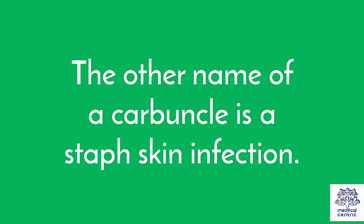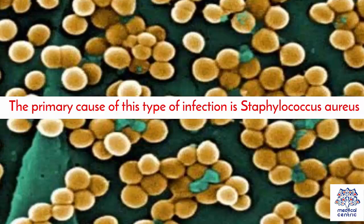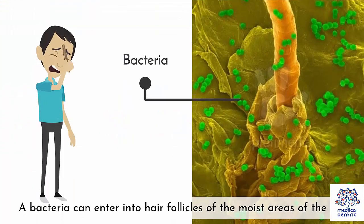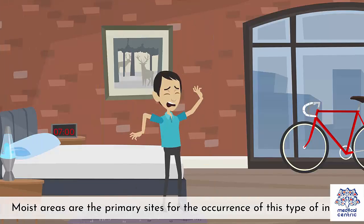The other name of a carbuncle is a staph skin infection. The primary cause of this type of infection is Staphylococcus aureus. Bacteria can enter into hair follicles of the moist areas of the body. Cuts, punctures, and other broken skin areas are the primary sites for this bacterium to enter the body and start this painful infection.